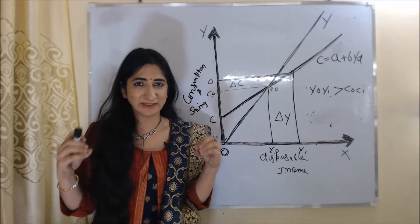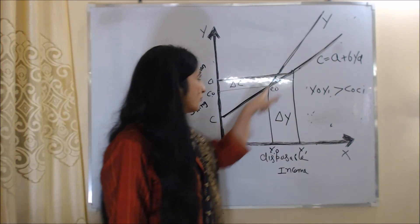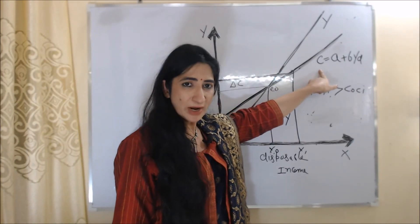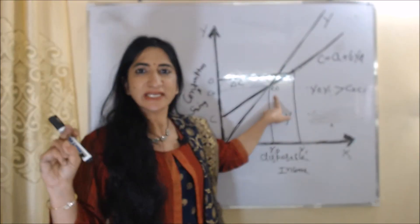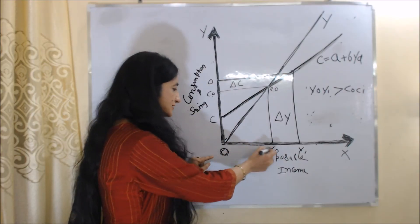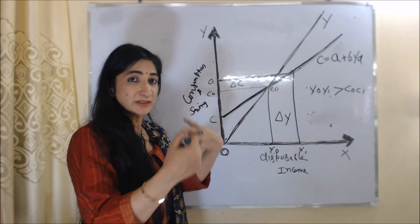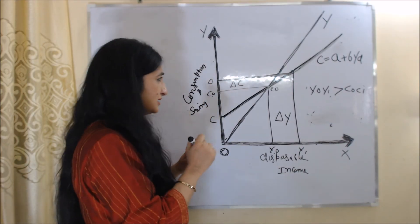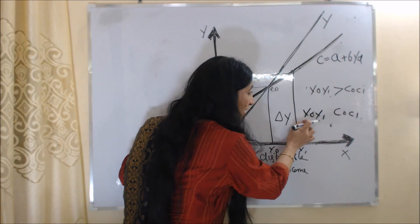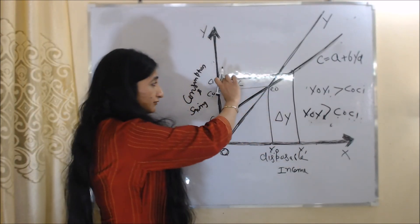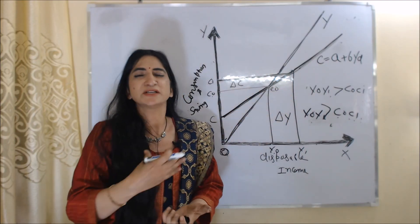Now we will understand the Absolute Income Hypothesis with the help of a diagram. On the X-axis we have disposable income and on the Y-axis we have consumption and saving. OY is the income line and CC is the consumption function C = a + bYd. E0 is the initial equilibrium point, where income is OY0 and consumption is OC0. Now suppose income increases from OY0 to OY1 — due to this, consumption also increases from OC0 to OC1. You can clearly see that the increase in income (Y0 to Y1) is greater than the increase in consumption (C0 to C1), showing the non-proportional relationship between income and consumption.